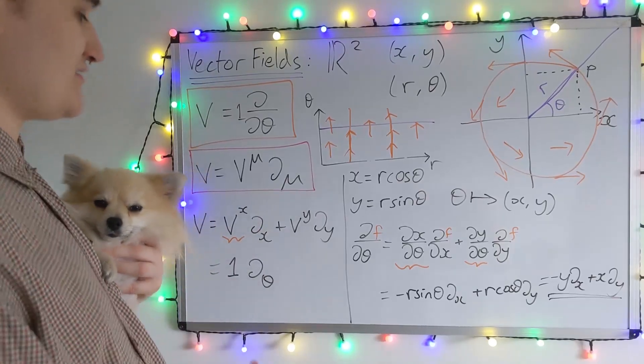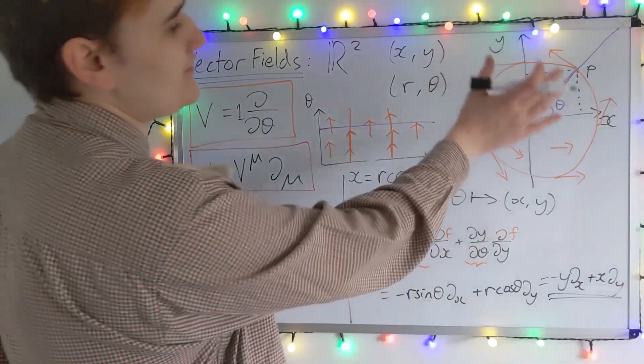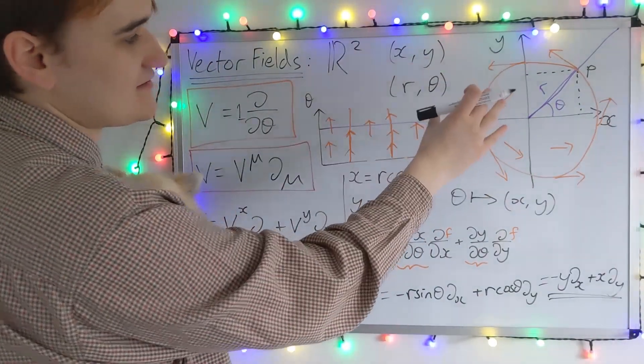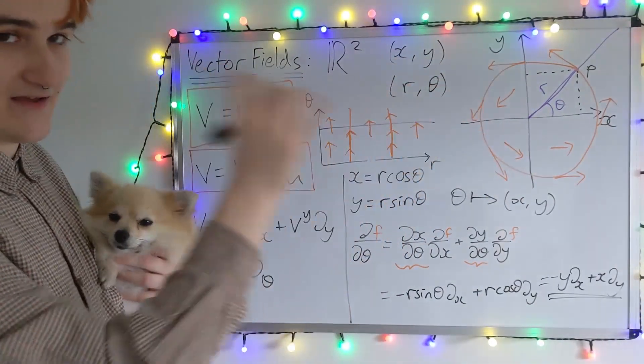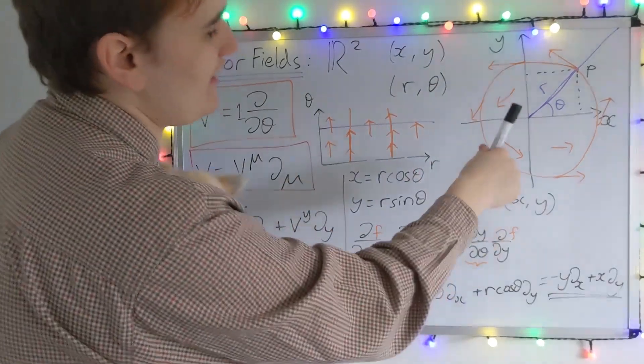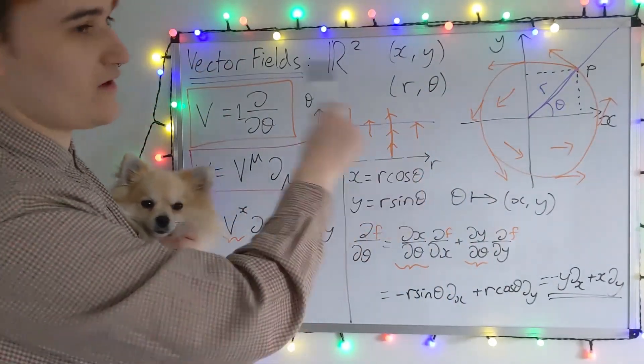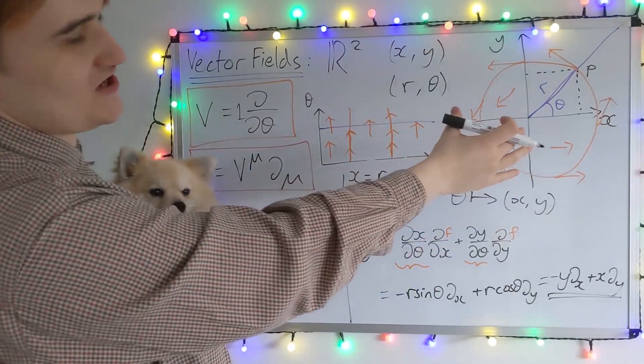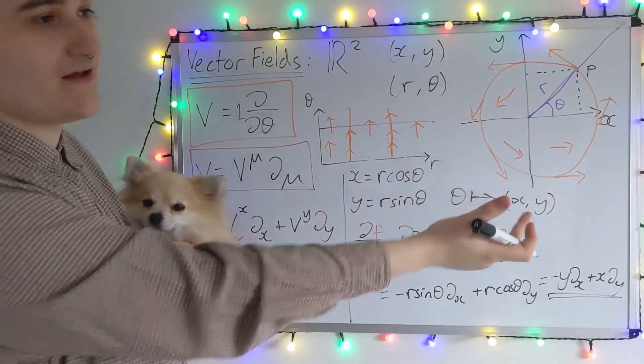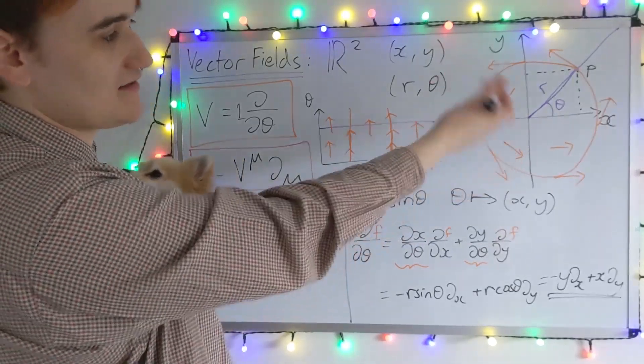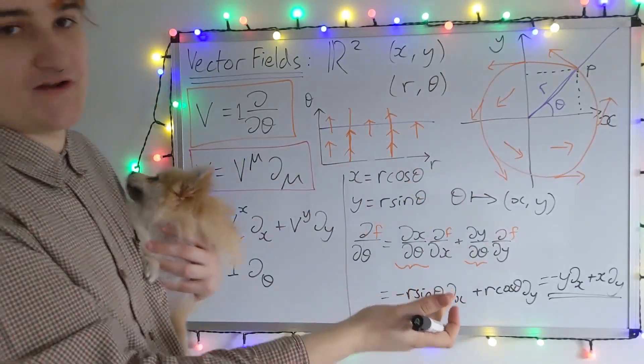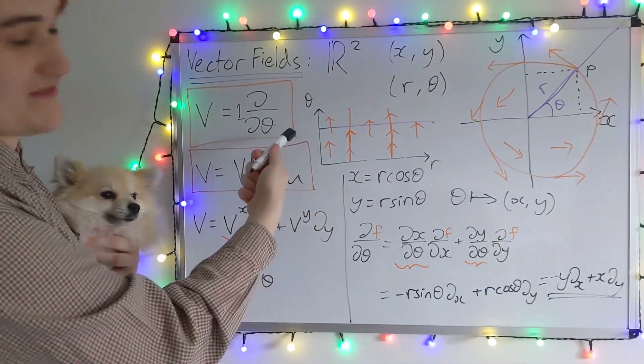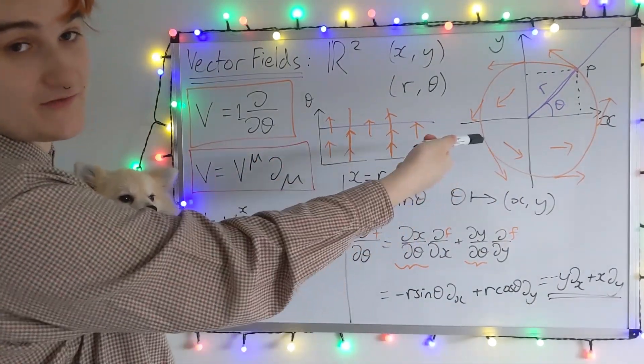I just now want to stress again that the picture I drew here is the manifold. So the vector field that we draw on the manifold is the vector field. It's just going to look different in whatever coordinate system we use. We're just kind of lucky in this case that the chart and the manifold are the same. So in this X, Y chart, the vector field appears as it would in real life on the manifold.